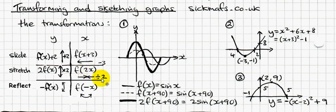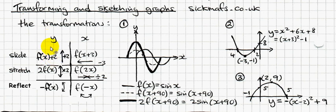If you times by 2 on the y-side, it stretches the graph. But if you times by half on the x-side, it stretches; times by 2 squeezes it. On the y-side, adding 2 moves the graph up 2, subtracting 5 moves it down 5 — everything as expected. On the x-side, everything is the opposite of what you expect.